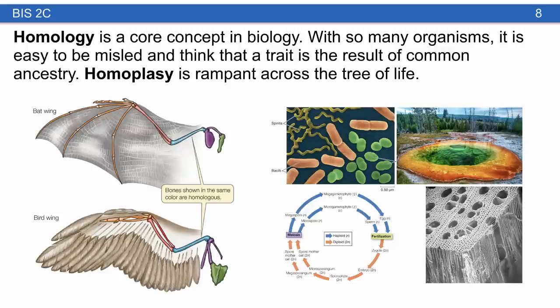Homology — similarity due to common ancestry — is a core and central concept in biology. It's really easy to be misled. When you look at characteristics, you might think they're the result of common ancestry, but after this class you realize that homoplasy, or convergent evolution, is really rampant across the tree of life, even in characteristics you don't expect.